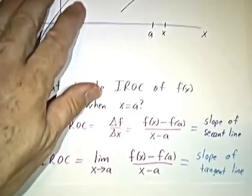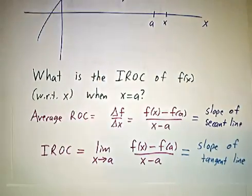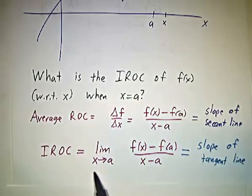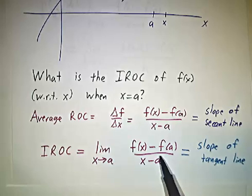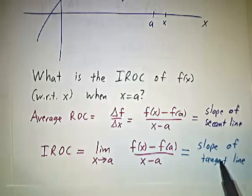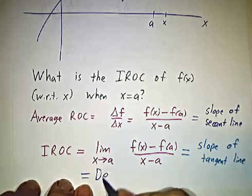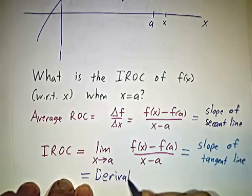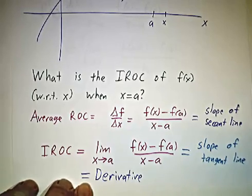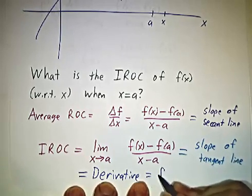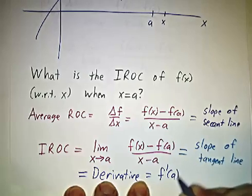But the instantaneous rate of change is the limit as we take x closer and closer to A of that ratio. And that's not going to be the slope of the secant line. That's going to be the slope of the tangent line. More importantly, it's the instantaneous rate of change and we give it a special name. We call it the derivative of the function f, and we often write it as f prime of a.